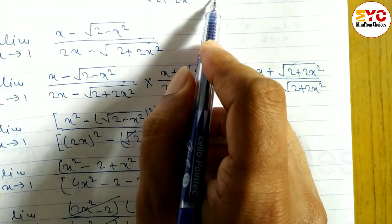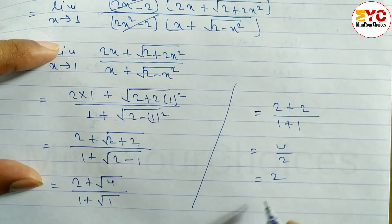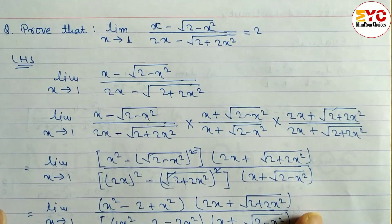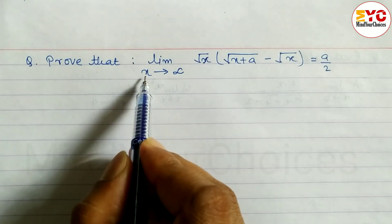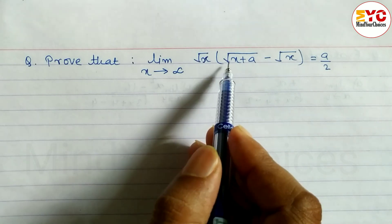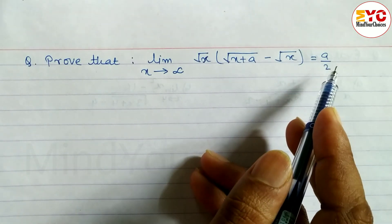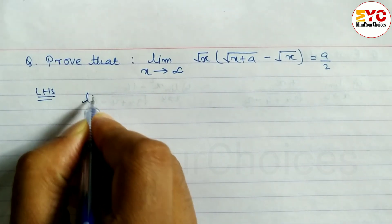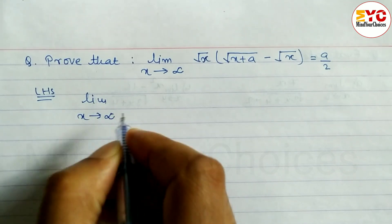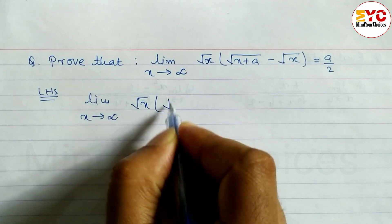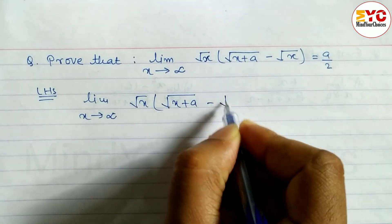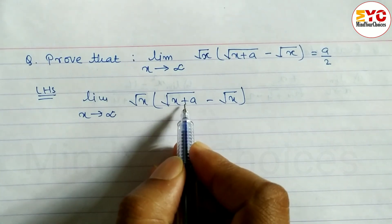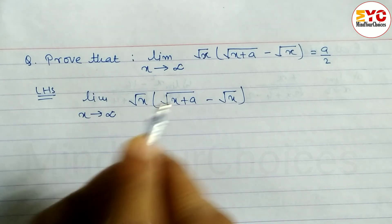Therefore RHS is proved. Hope you understand this question from class 11 Limits and Continuity. Next question: prove that limit x tends to infinite of √x times [√(x + a) minus √x] is equal to a/2. Let's take a start. First we take LHS: limit x tends to infinite of √x times [√(x + a) minus √x]. Since x tends to infinity this gives an indeterminate form.